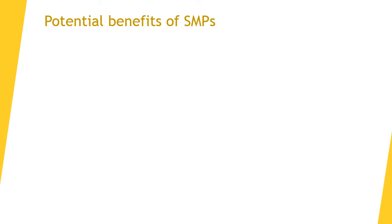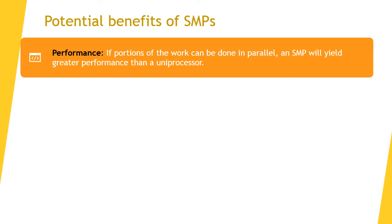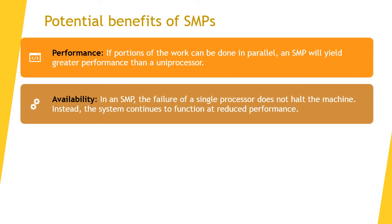An SMP organization has several potential advantages over a uniprocessor. For performance: if work can be organized so that portions run in parallel, a system with multiple processors will yield greater performance. For availability: because all processors can perform the same functions, failure of a single processor does not halt the machine — the system can continue to function at reduced performance.